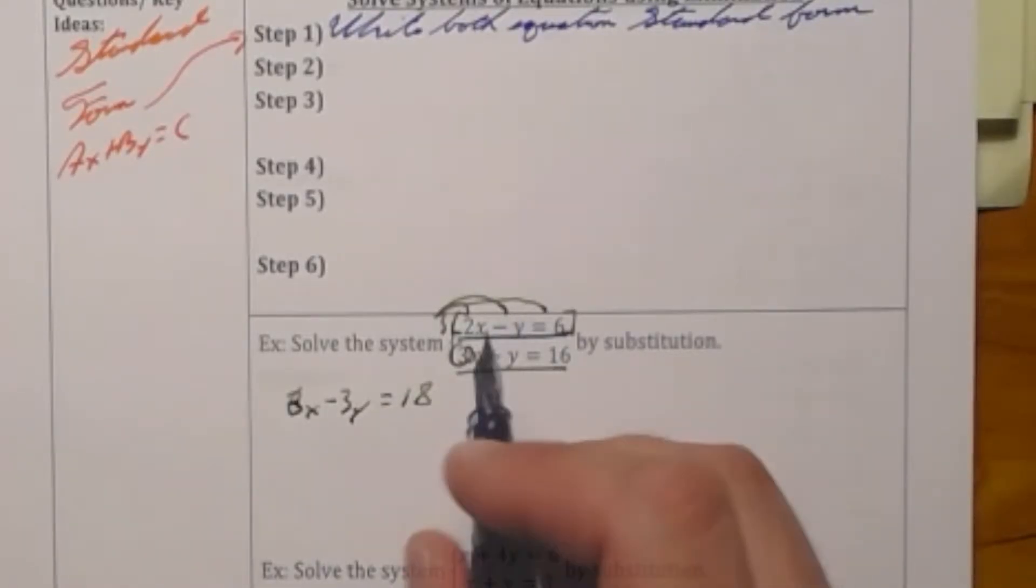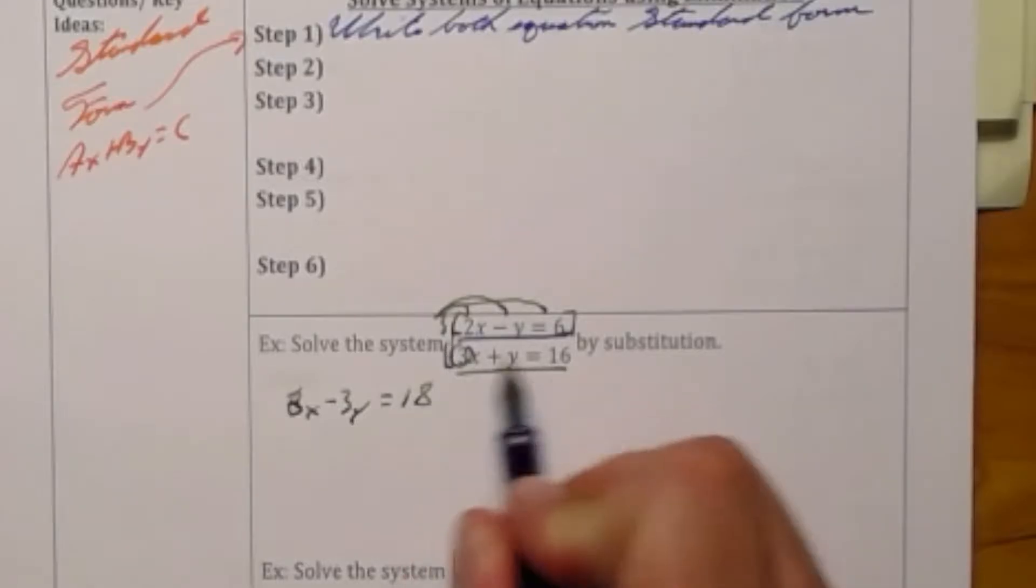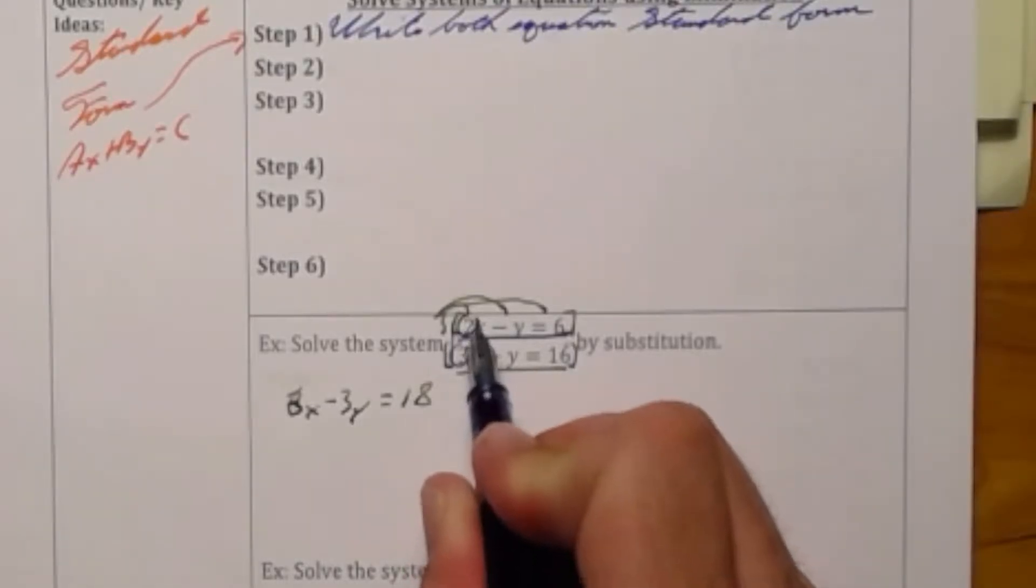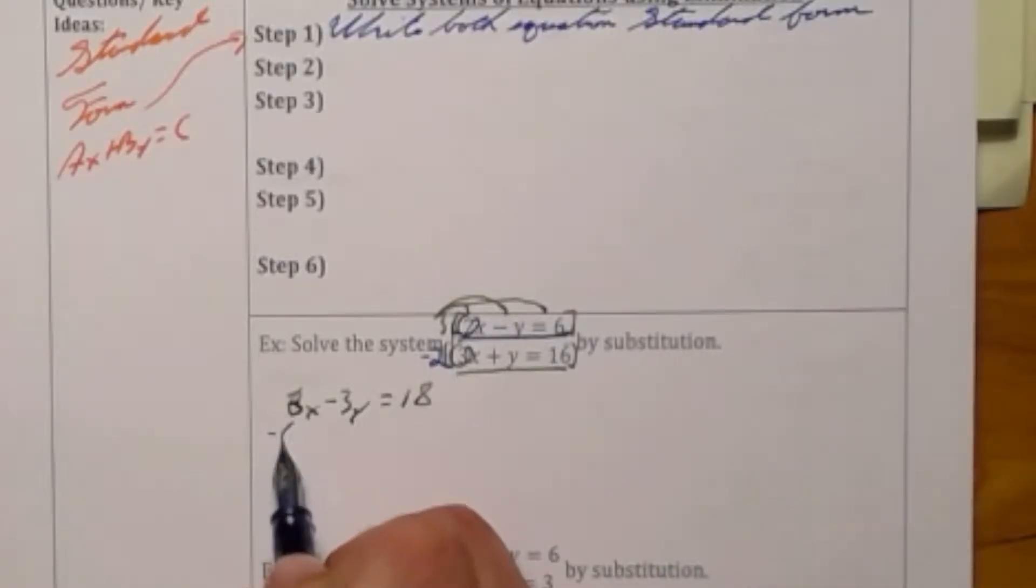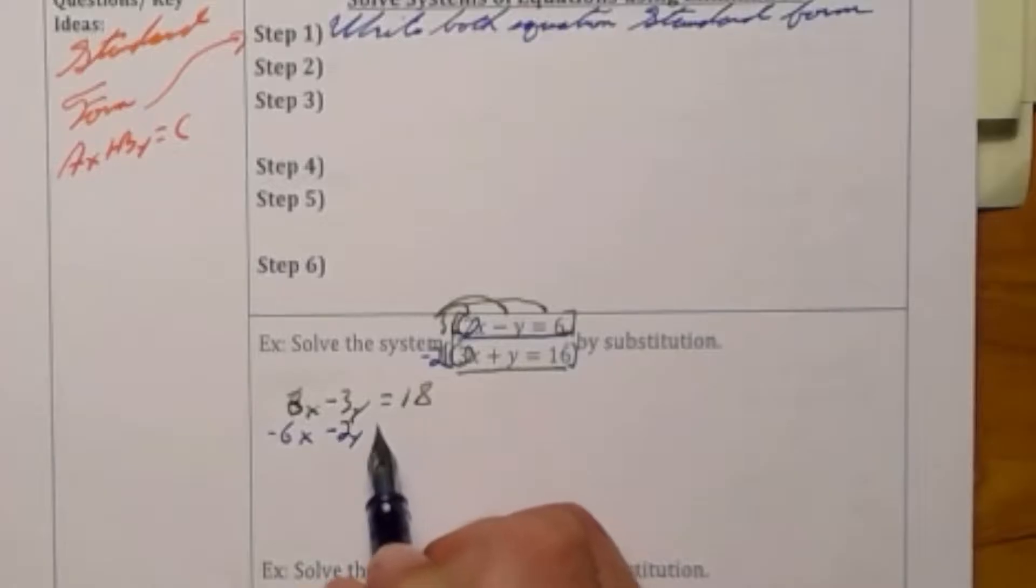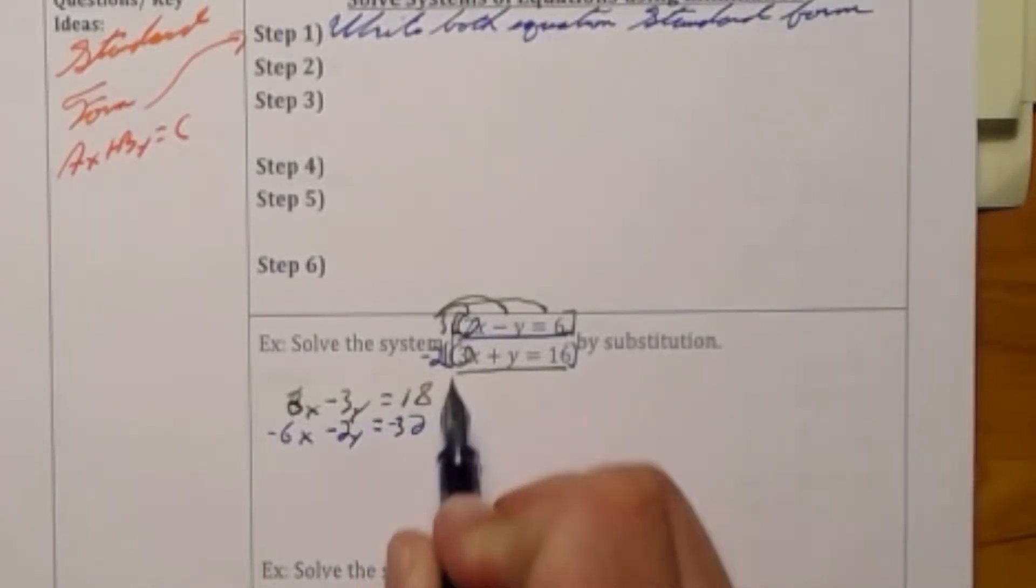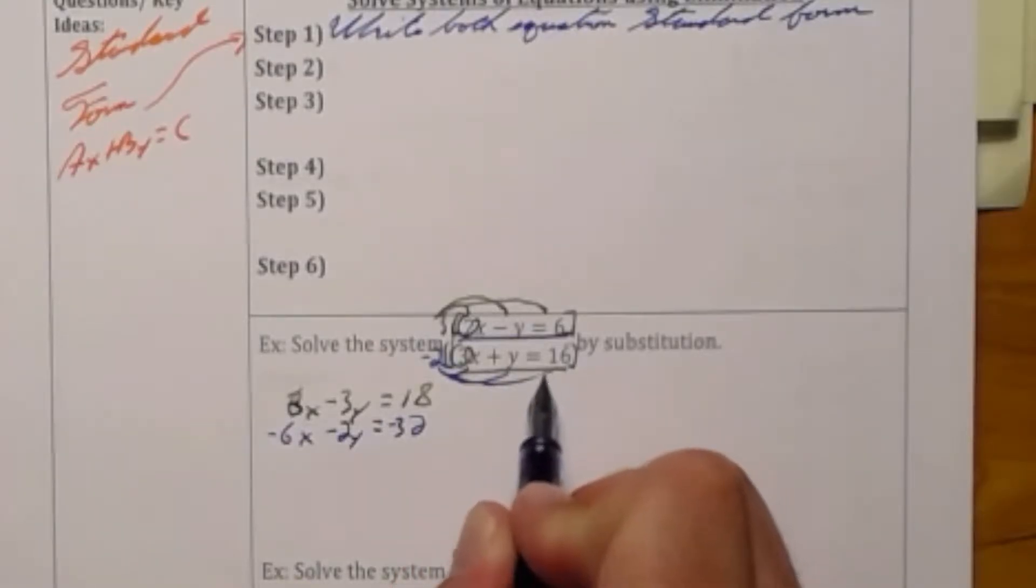The bottom equation underlined in green I'm going to multiply by the opposite of a from the first equation. So negative 2 and I'm going to get a new equation of negative 6x minus 2y is equal to negative 32. This will show me my second and third step.